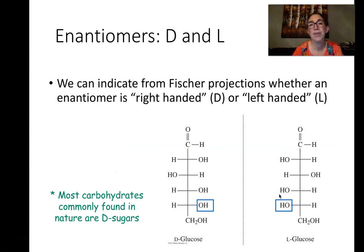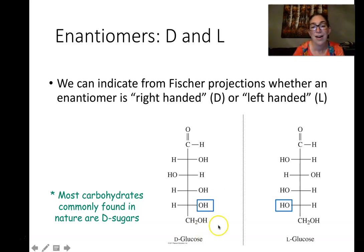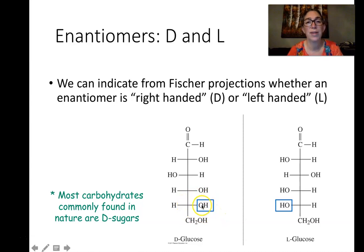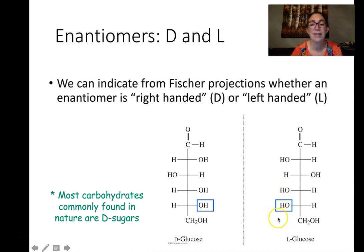To determine whether a carbohydrate is the right-handed or left-handed version — right-handed is D and left-handed is L — we look at the last alcohol on the last chiral carbon. If that alcohol functional group is on the right side, this is the D enantiomer. If it's on the left side, this is the L enantiomer. So you're just looking at the alcohol group on that last chiral carbon.